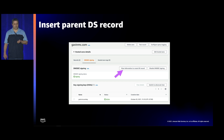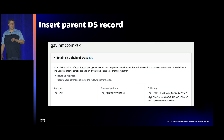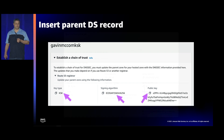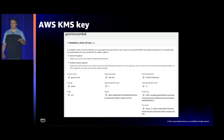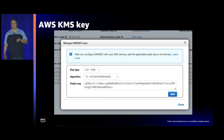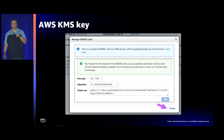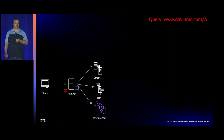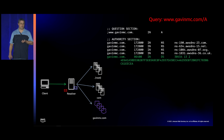To publish the DS record at the parent, go back into the Route 53 hosted zone console — there's information for updating the DS record showing the key signing key type, signing algorithm, and key value. If you're using the Route 53 registrar, you fill in those three fields in the registrar console under 'Manage keys.' Once submitted, the DS record is published at the .com zone. Now when the resolver queries .com, it gets not only the delegation but also the DS record, and from this moment DNSSEC is fully enforced — resolvers expecting a signature will return SERVFAIL if they don't see one.